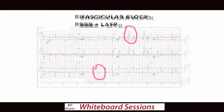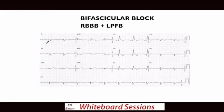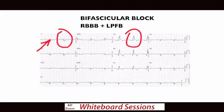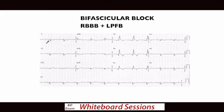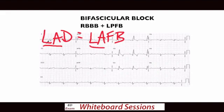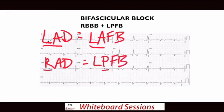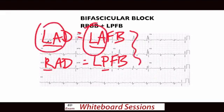The other type of bifascicular block - nicely arrowed here - is where you see a right bundle branch block and a right axis deviation, and that's again a bifascicular block. In a patient with syncope, that's bad - they get admitted, don't send them home with this ECG. It can be tricky to remember the difference between left anterior and left posterior fascicular block. The way I remember it is that left axis deviation gives you a left anterior fascicular block - L, A and L, A. Whereas a right axis deviation gives you a posterior fascicular block, because P and R are close together in the alphabet. See either of these with a right bundle branch block, and it's a bifascicular block.